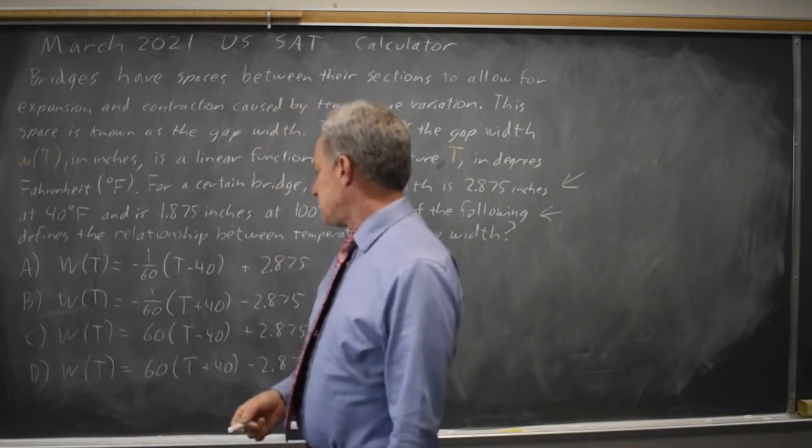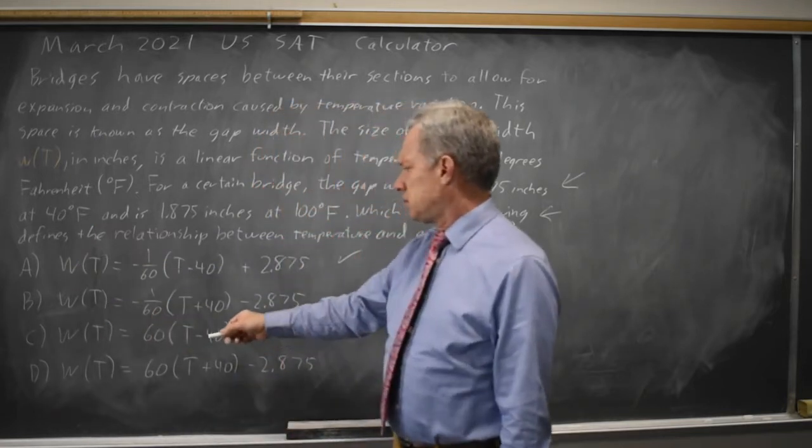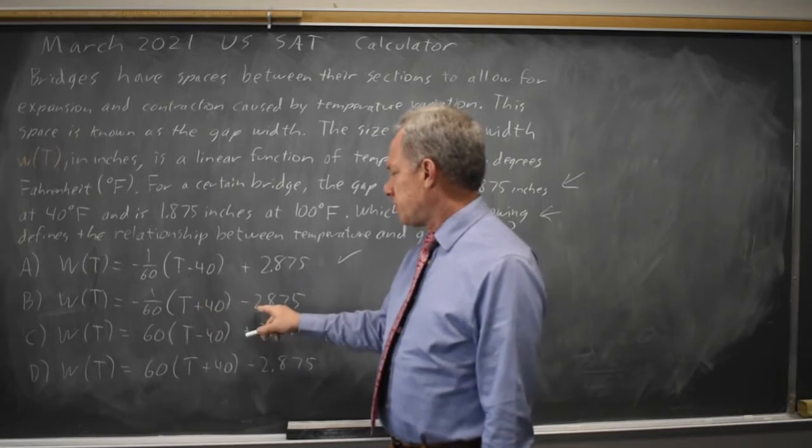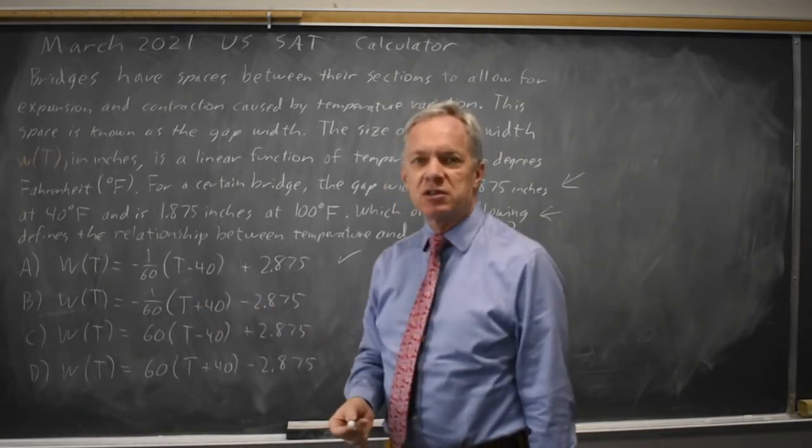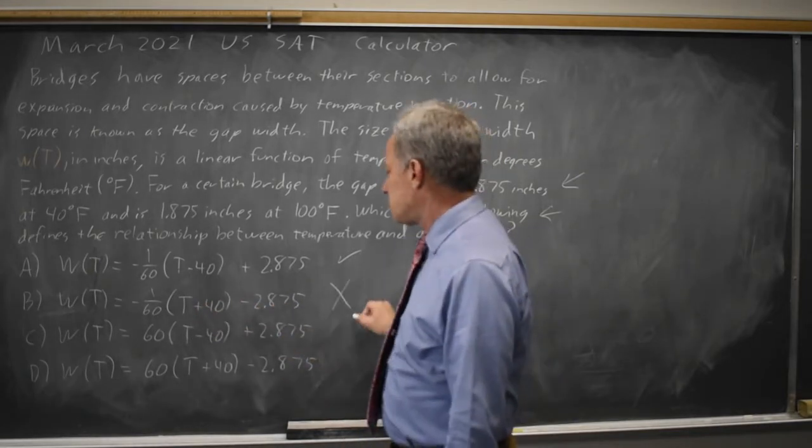80 over 60 and negative, so that's a negative number minus 2.875. That's not a positive 2.875, so that one is wrong.